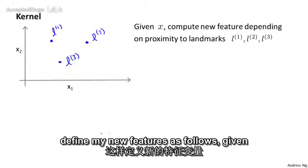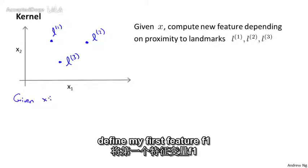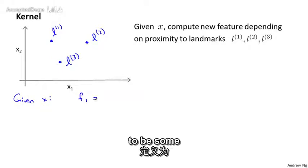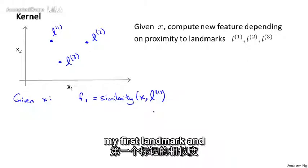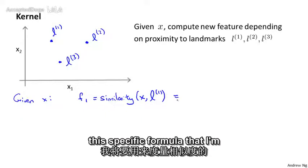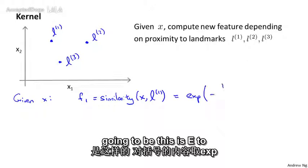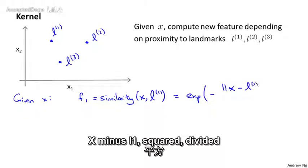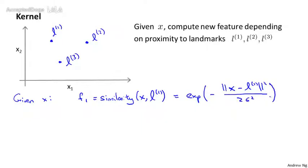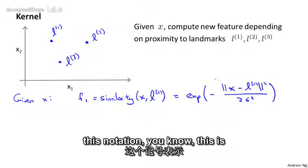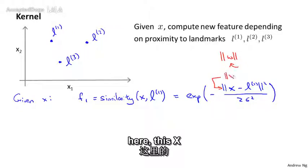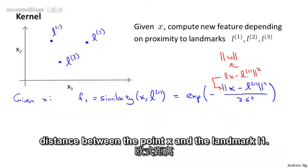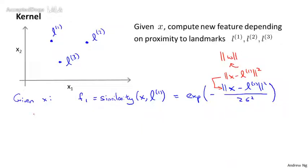What I'm going to do is define my new features as follows. Given an example x, let me define my first feature f one to be some measure of the similarity between my training example x and my first landmark. The specific formula I'm going to use to measure similarity is: e to the minus the length of x minus l one squared, divided by two sigma squared. This x minus l one is actually just the Euclidean distance squared between the point x and the landmark l one. That's my first feature.